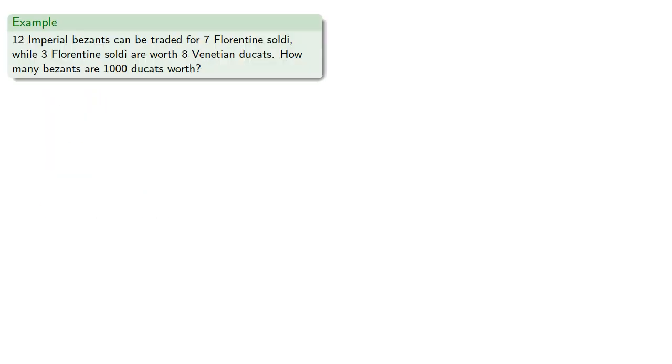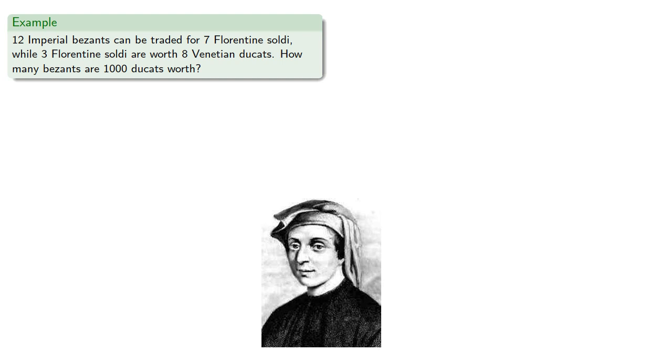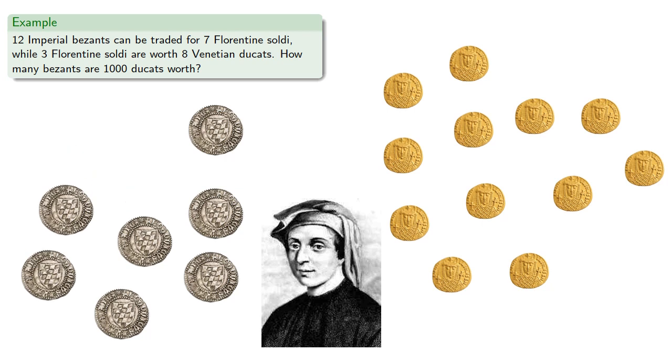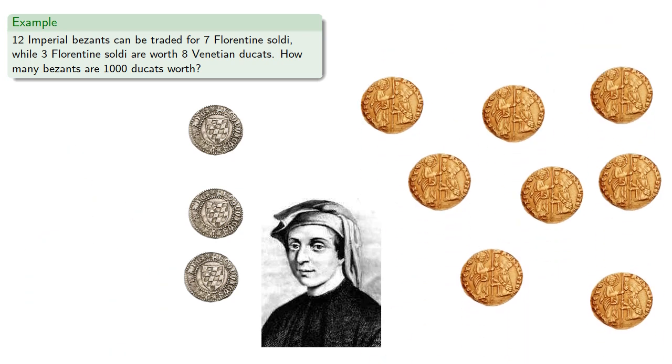In his Liber Abaci, Leonardo of Pisa posed questions that involve currency exchanges among the various Italian city-states. These are actual coins, although the exchange rates are made up for this problem. Suppose twelve imperial besants can be traded for seven Florentine soldi, while three Florentine soldi are worth eight Venetian ducats. How many besants are one thousand ducats worth?